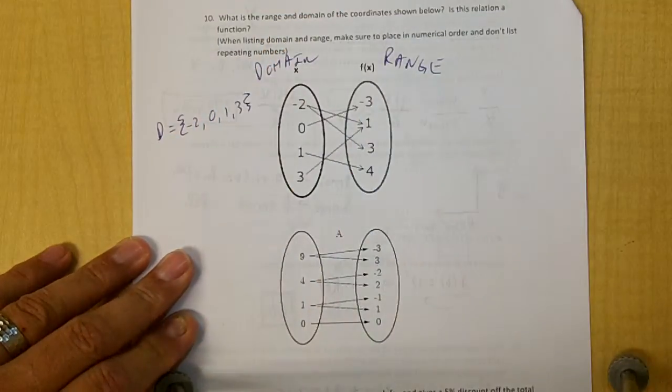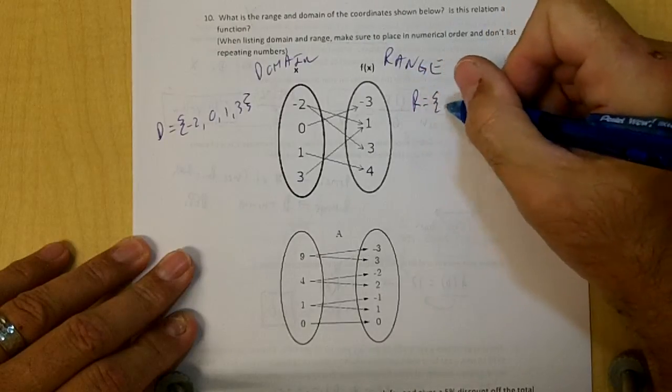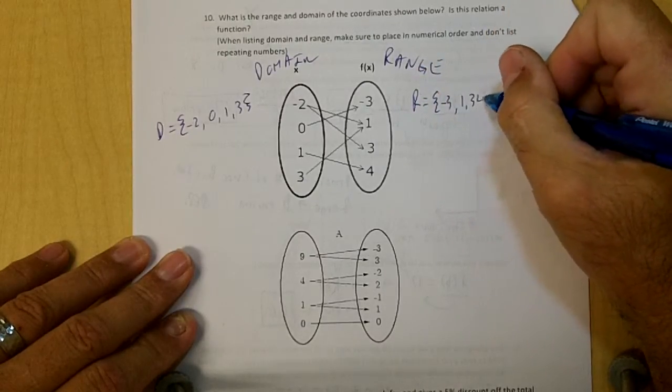And our range would be over here. We need to put them in numerical order. The range would be negative 3, 1, 3, and 4.